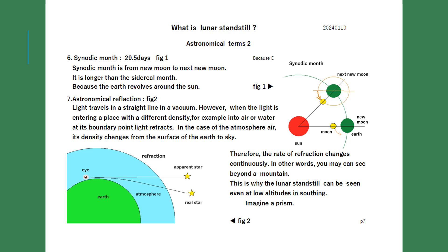Astronomical terms 2. 6. Synodic month: 29.5 days. The synodic month runs from new moon to the next new moon. It is longer than the sidereal month because the Earth revolves around the sun. 7. Astronomical refraction: light travels in a straight line in a vacuum. However, when light enters a place with different density — for example, into air or water — it refracts at the boundary. In the atmosphere, density changes from the surface of the Earth to the sky, so the rate of refraction changes continuously. In other words, you may be able to see beyond a mountain. This is why the lunar standstill can be seen even at low southing altitudes. Imagine a prism.